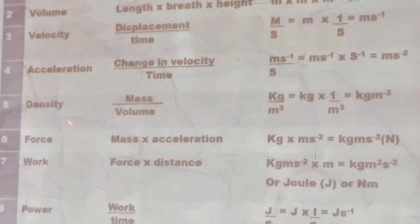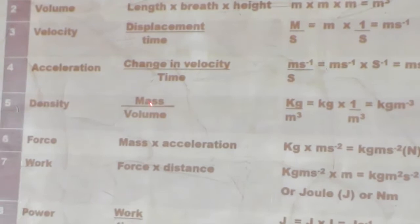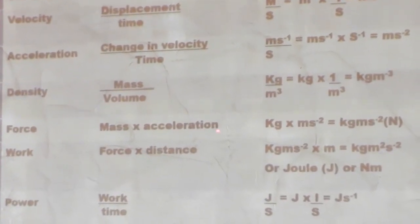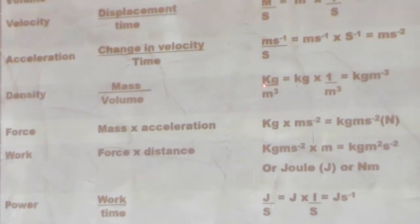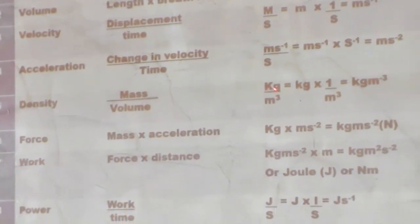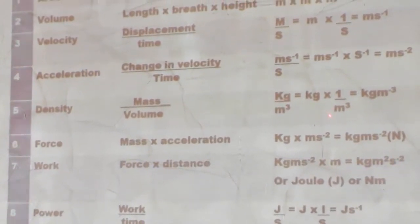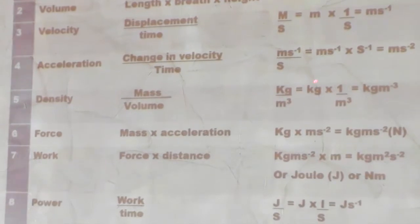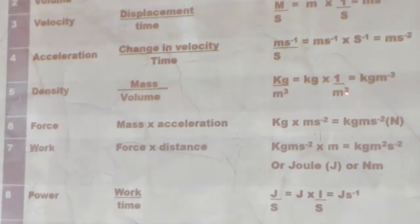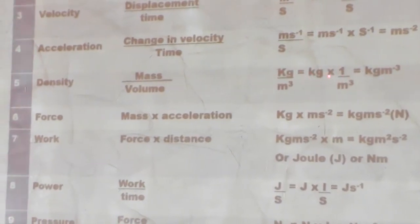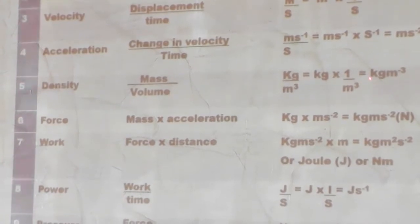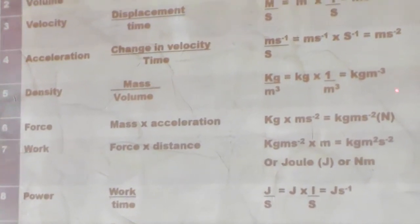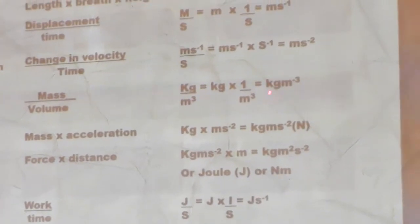Now let us take a look at density. Density is mass divided by volume. Mass is measured in kg, and volume is measured in meter cube (m³). When you change the division to multiplication, you get kg multiplied by 1 over meter cube, which gives kg per meter cube. Therefore kilogram per meter cube is the SI unit of density.